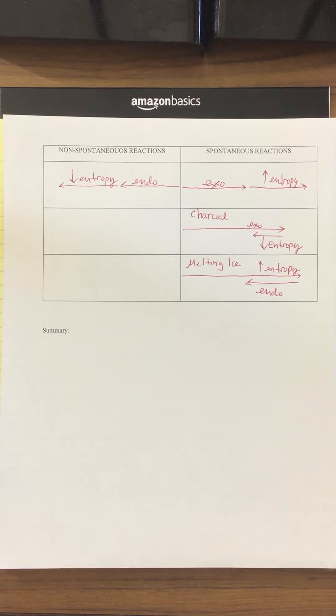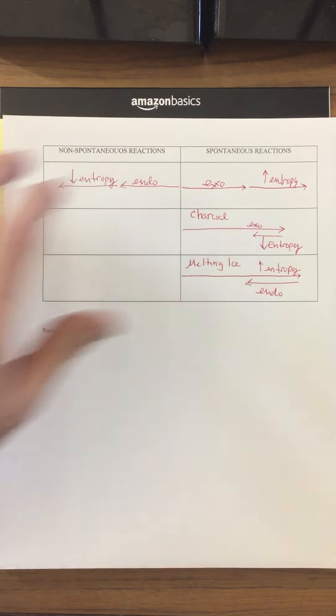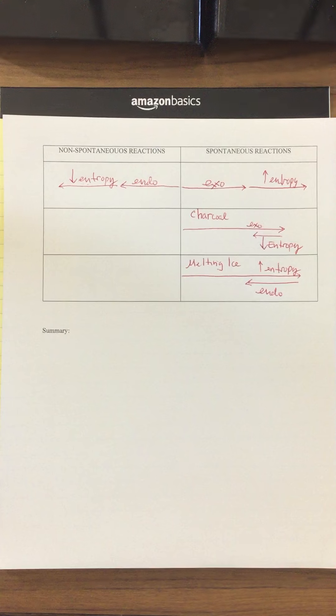We discussed what a spontaneous reaction is - they happen. Non-spontaneous reactions don't happen. And there are two factors that will push a reaction to go forward. One of them is entropy, the other one is heat.